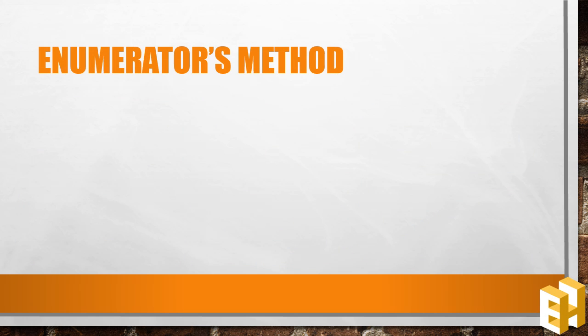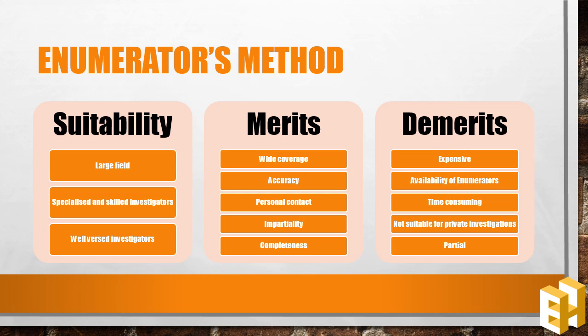Under the enumerators method, the investigator himself meets the respondents and the questionnaire is filled by the enumerator himself. This method is suitable when the field of investigation is large, investigation needs specialized and skilled investigators, and investigators are well versed with the local language and cultural norms. The merits are: this method covers a wide area and includes information provided by illiterates; the data obtained is more accurate because the enumerator himself collects the data; there is personal contact with the informant so accurate and right answers are obtained; enumerators are generally impartial in the collection process; and the questionnaires filled by enumerators are complete.